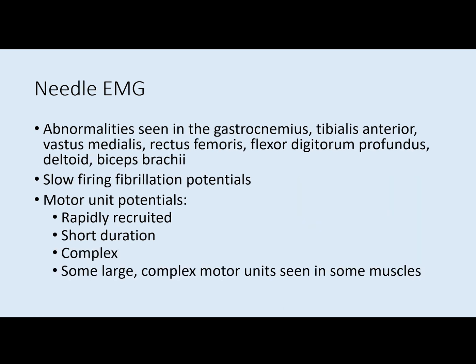His needle EMG showed abnormalities in multiple muscles including the gastrocnemius, tibialis anterior, vastus, rectus femoris, flexor digitorum profundus, deltoid, and biceps brachii. Those abnormalities were slow firing fibrillation potentials and abnormal motor unit potentials that were rapidly recruited, short duration, and complex for the most part, but there were some large complex motor units seen in a few muscles.